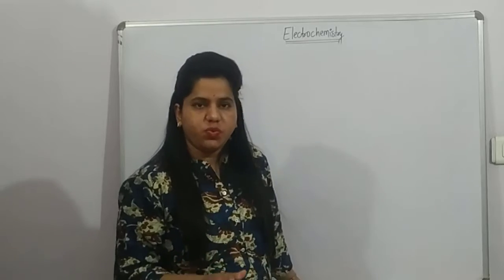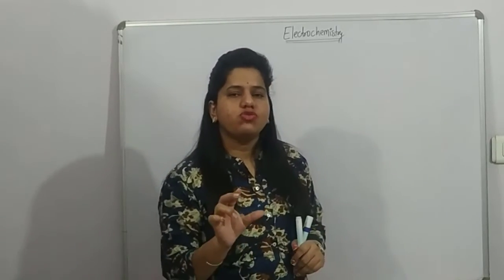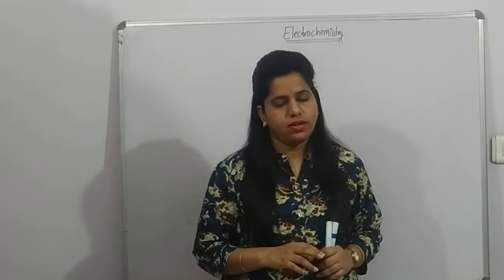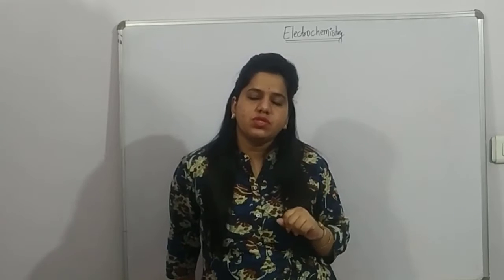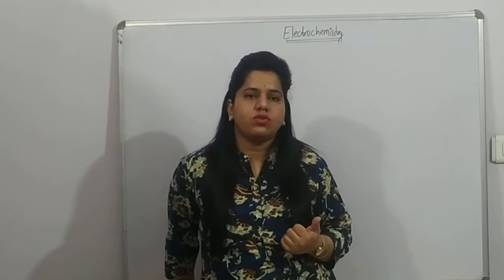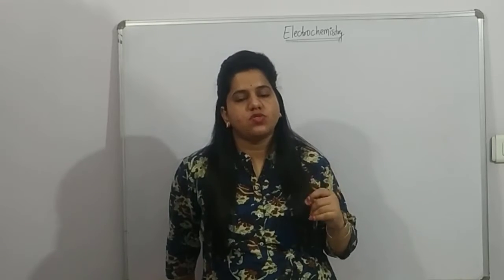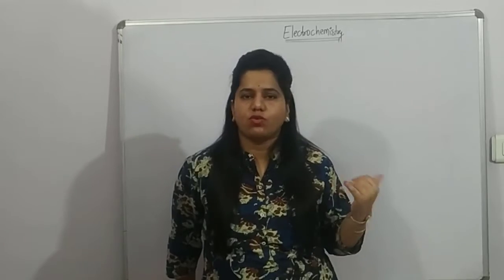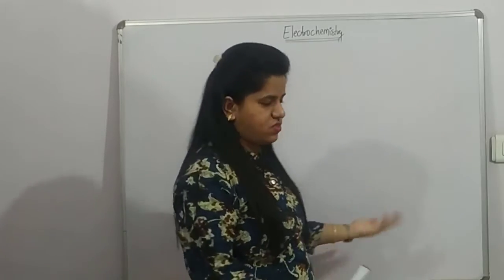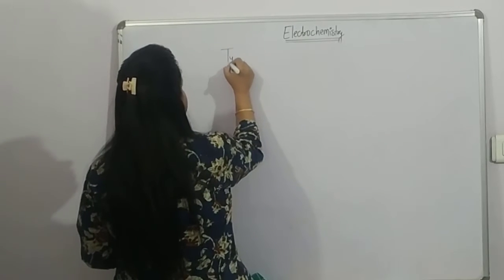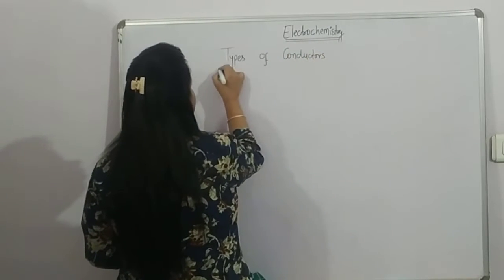Now we are talking about electricity. There is a related terminology called conduction. We have two important types: conductors and insulators. Conductors are substances which allow electricity to pass through them. Now we will talk about types of conductors. We have two types of conductors.